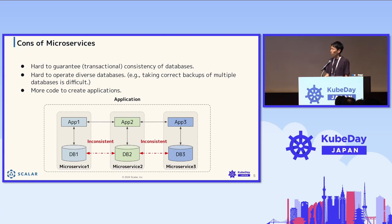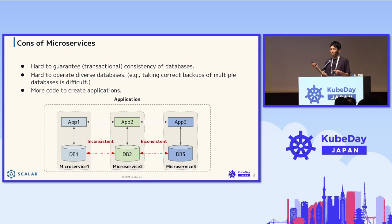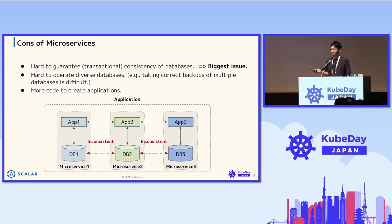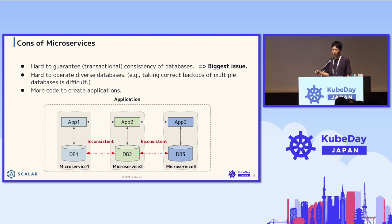The third downside is more code to create applications. Since microservices are decoupled, the application has to virtually glue them together, requiring glue code. The first issue — consistency — is the biggest. Without consistency of databases, you're going to have so many troubles.